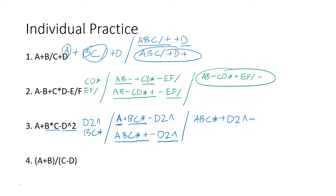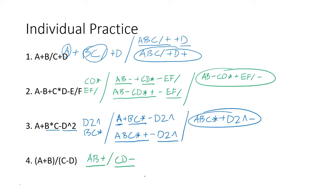Let's get to the next one. We have a plus b c minus divided by c — there is a division, but I have to account for the parentheses first. So we get a b plus divided by c d minus. A b plus is my first operand, c d minus is my second operand. Converting that into postfix: b plus c d minus divide. That's the answer.